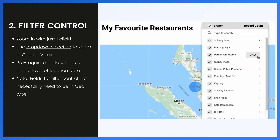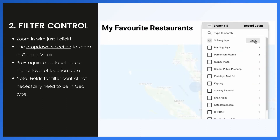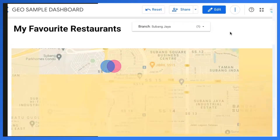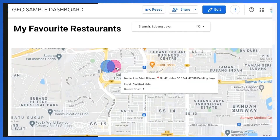That leads us to the second option, which is using a filter control to enable users to zoom in to a specific country or city with just one click. For example, if I've traveled to Subang Jaya and want to find some nice food at my selected restaurant outlets, I can click on the filter and select Subang Jaya, and the map will automatically zoom in to that region.